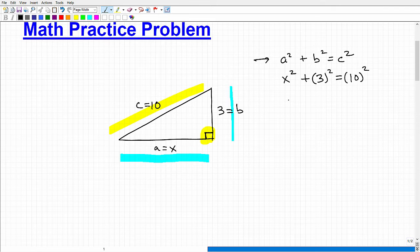All right, so let's go ahead and do this now. So this would be x squared plus 3 squared is obviously going to be 9. And 10 squared is 100. So now to solve for x squared, I need to subtract 9 from both sides of the equation. And I get x squared is equal to 91.